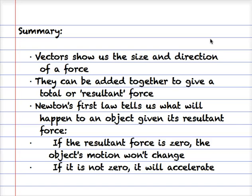In summary: vectors show us the size and direction of a force and can be added together to give the total or resultant force. Newton's first law tells us what will happen to an object given its resultant force. If the resultant force is zero, the object's motion won't change — it remains at constant speed or stationary. If the resultant force is not zero, the object will accelerate, either getting faster or slower.